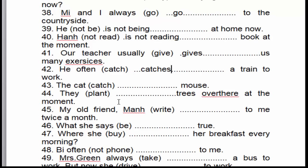Câu số 43: 'The cat catches the mouse.' Con mèo bắt được con chuột. Chuyện này là chuyện bình thường, cho nên nó sẽ là thì hiện tại đơn. 'The cat' là chủ ngữ số ít, 'catch' là động từ. Động từ này chúng ta phải thêm 'es' → 'catches'.